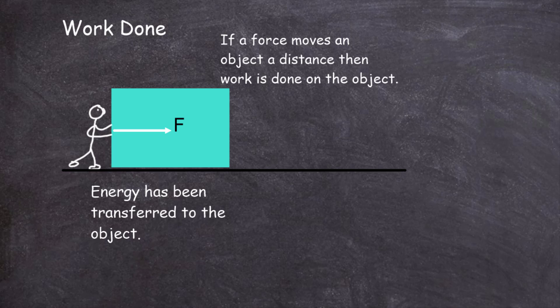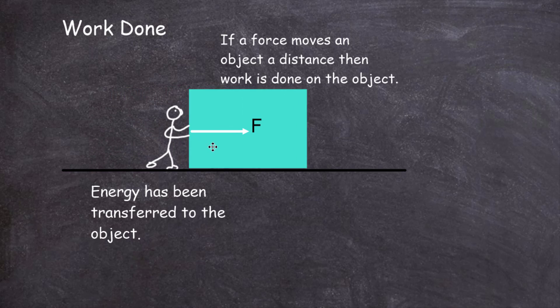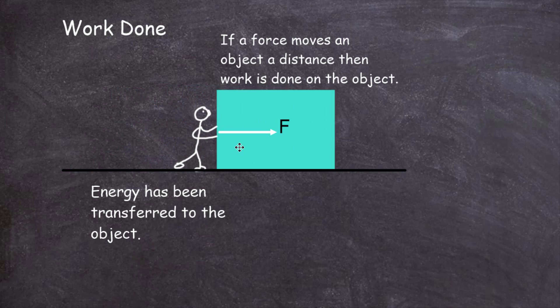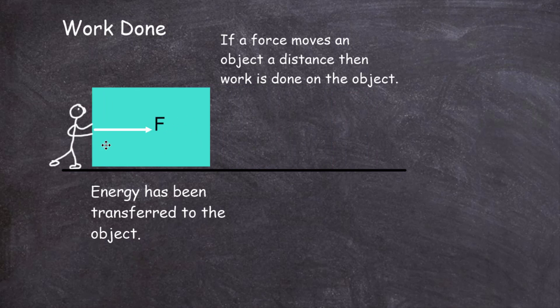Remember, energy is really defined as a quantity which has the ability to do work, so you can see how the two are linked together. If a force moves an object a certain distance then we say work has been done on that object — but only if the force moves the block through a certain distance.